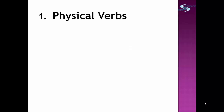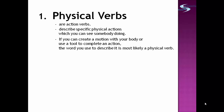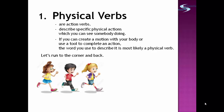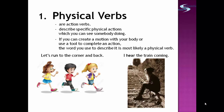We have groups of verbs. The first group is physical verbs. These are action verbs that describe specific physical actions which you can see somebody doing. If you can create a motion with your body or use a tool to complete an action, the word you use to describe it is most likely a physical verb. For example: 'Let's run to the corner and back' — the word 'run' describes what they are doing. Another example: 'I hear the train coming' — 'hear' is the verb.